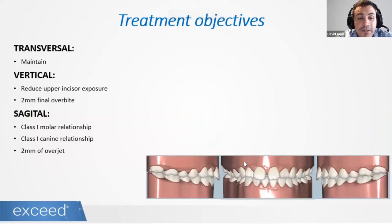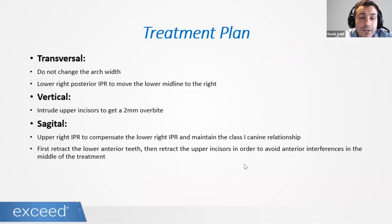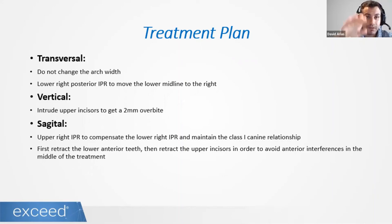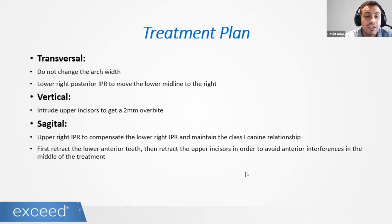The treatment objectives are for ourselves — you can incorporate them if you want. Then you create the treatment plan. For me, it is easier if you write it with bullet points separating everything by plane: transversal — what do you want to achieve? Vertical — what do you want to achieve? And sagittally — what do you want to achieve? This format makes it very difficult for the technician or supervisor to miss anything, because everything is divided and written clearly.